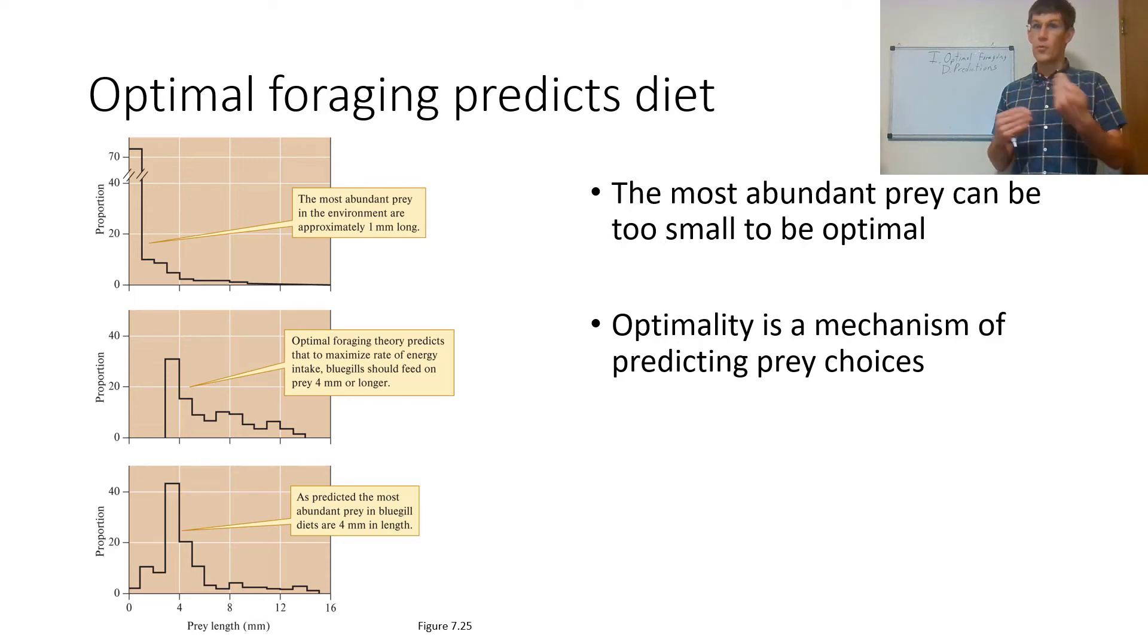Of course, it'd be great to have the biggest prey, but they're really rare and require a long search time. Optimality balances this out, giving bluegill sunfish diets that are mainly prey that's four millimeters in length. That's what's optimal. It's the thing that can be found the most but provides most energy. Somewhere between the most energy, which would be biggest, and found the most, which is smallest, is this nice middle ground of about four millimeters. You can see this in several other studies.